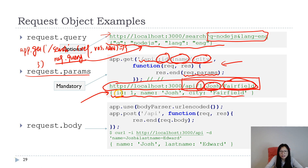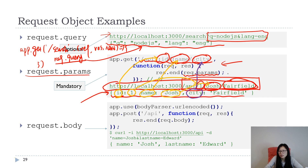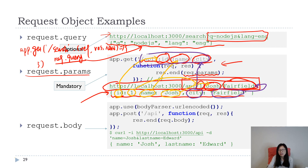The key matches the placeholder name defined in the route. So the key 'id' matches the colon-id placeholder, and the value '1' comes from the URL. Similarly, 'name' matches the colon-name placeholder with value 'Josh', and 'city' matches the colon-city placeholder with value 'field' from the URL. Parameters are mandatory — your URL must follow the defined pattern.